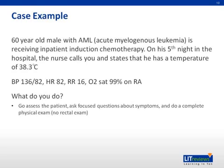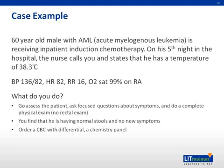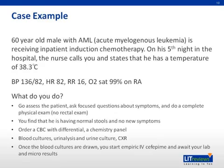In general, it is still recommended to avoid a rectal exam in these patients to avoid more bleeding. You find that he is having normal stools and no new symptoms. Therefore, you order a CBC with differential and a chemistry panel. You can hold off on a Clostridium difficile toxin as he's not clinically having symptoms consistent with this infection. You also order blood cultures, a urinalysis and urine culture, as well as a chest x-ray. Once these labs are drawn, you would start empiric IV cefepime for broad gram-negative coverage and await your lab and micro results.